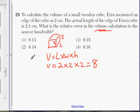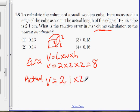That's Ezra's measurement. The actual measurement is 2.1 for each side. So the new volume, the actual volume is 2.1 times 2.1 times 2.1. Let's plug into the calculator and see what you get. You get 9.261.